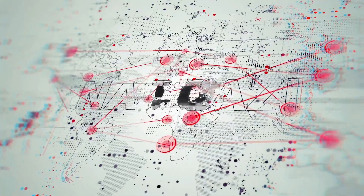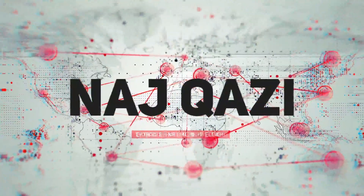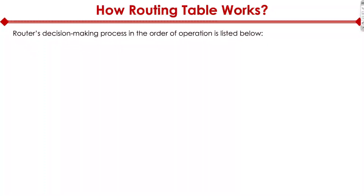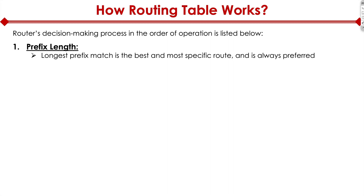How does a routing table work? Let's quickly talk through the decision-making process in the order of operation. The first order of operation is prefix length. The longest prefix match is the best and most specific route, and is always preferred in the routing table. This criteria has the highest preference and trumps all other route attributes.